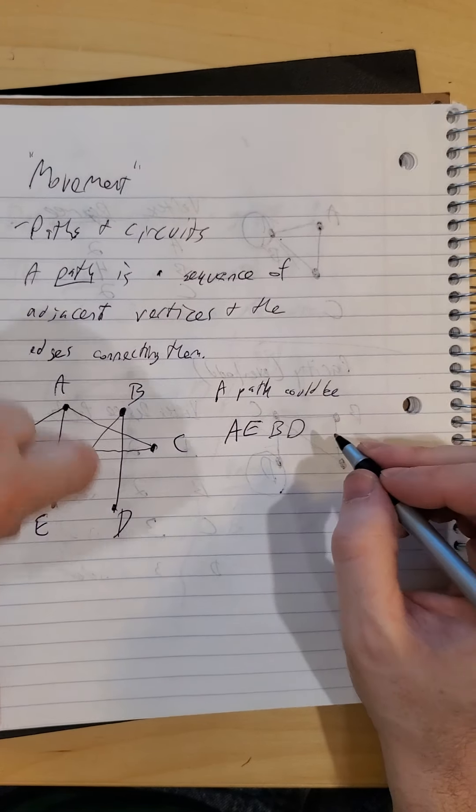This one, not connected. I can't go from any of the other ones to E. This graph, also not connected. I can't get from R to S, for example.